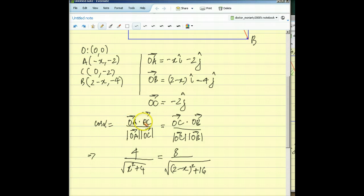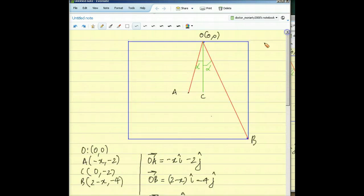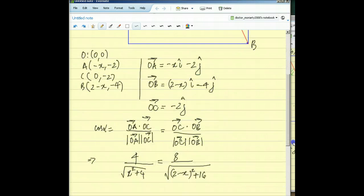So cos of alpha is OA—let's take this angle here first, AOC—and so therefore OA dot OC divided by magnitude of OA divided by magnitude of OC should equal cos alpha. That's the first part of the equation.